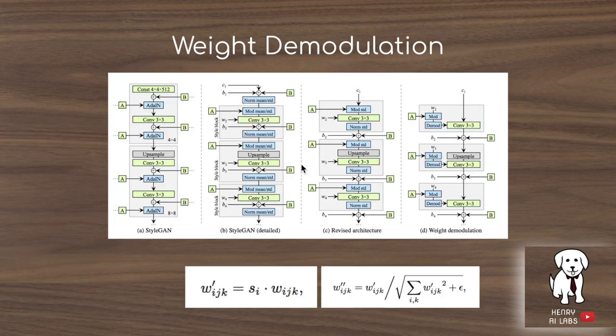The first change the authors describe is to separate out the addition of the Gaussian noise B from the adaptive instance normalization layer, citing that these might have conflicting interests and might block each other out. So they separate this out into these style blocks, pictured in gray.